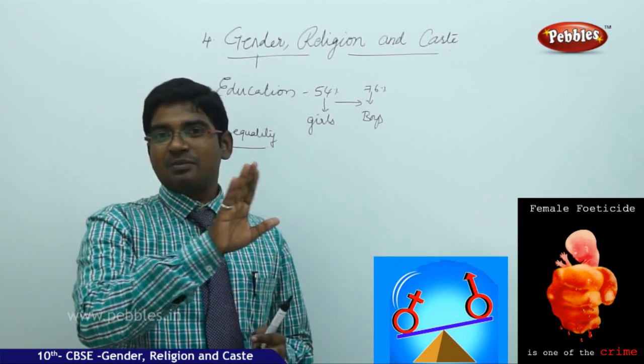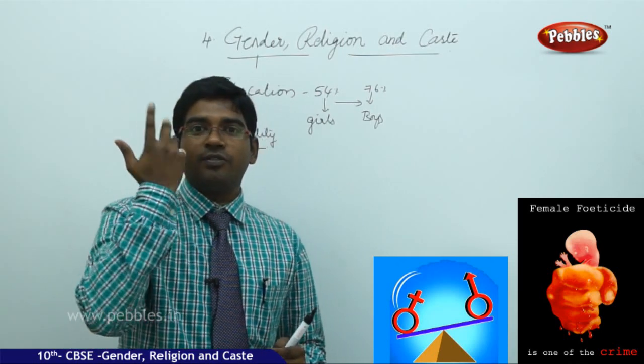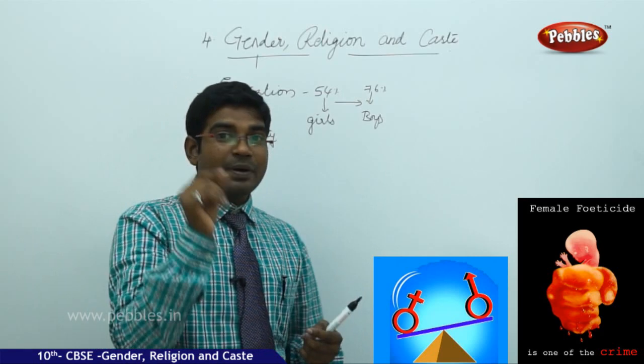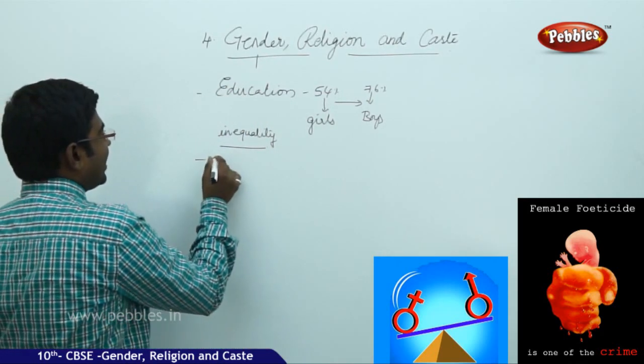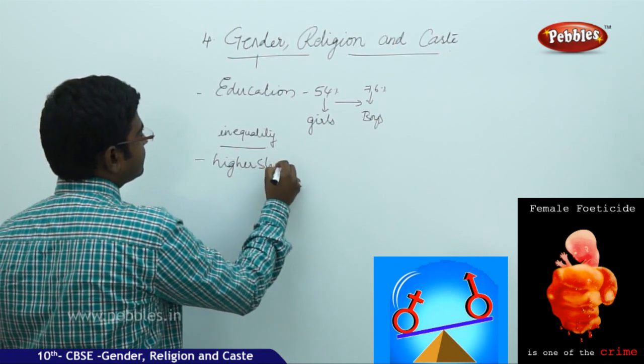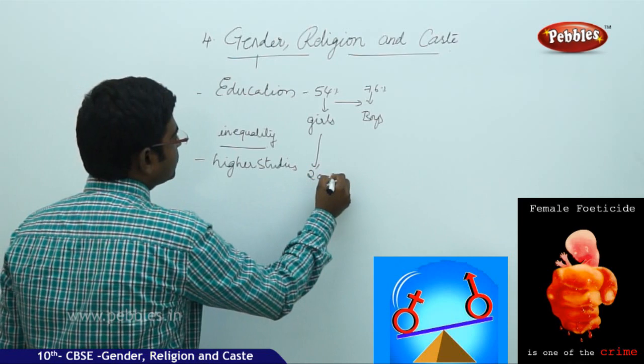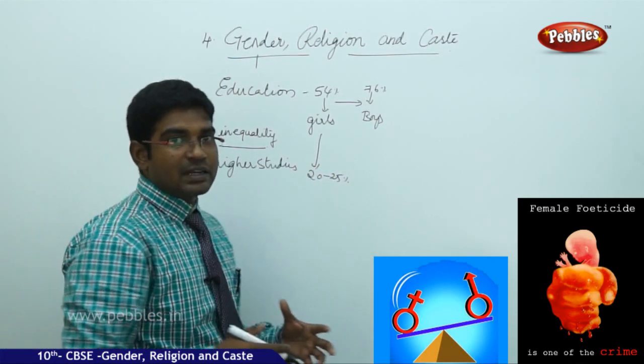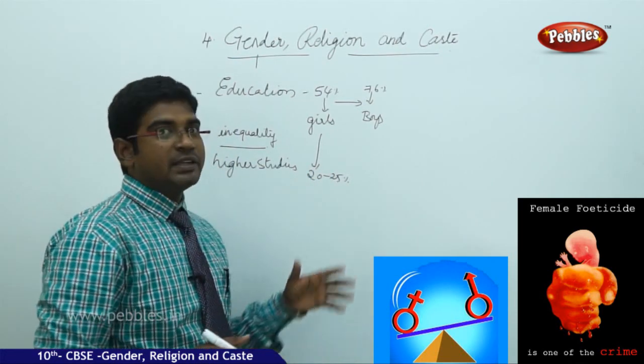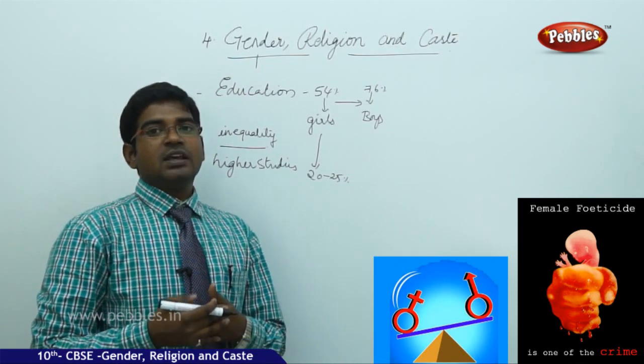These are the basic observations we see in our day-to-day life. In education, women are completely neglected. Once you get educated only then you have a chance to go for further higher studies. So the percentage of people going to higher studies falls to 20 to 25 percent in the girl community, where it falls nearly 70 percent in boys.